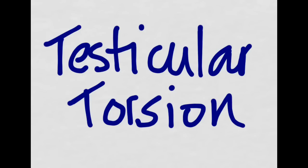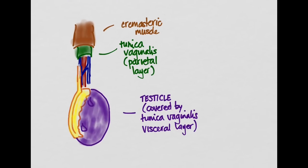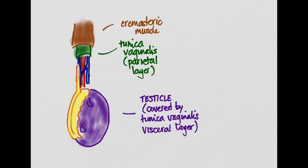Let's talk about testicular torsion. First let's go over some anatomy. Here we have the testicle. This purple part here is the testicle, and you can see I drew these little pedunculated things on here - these are the testicular appendages. This is covered by something called the tunica vaginalis visceral layer. This here is the epididymis, and this is the vas deferens. This vas deferens runs through the spermatic cord along with an artery and a vein.